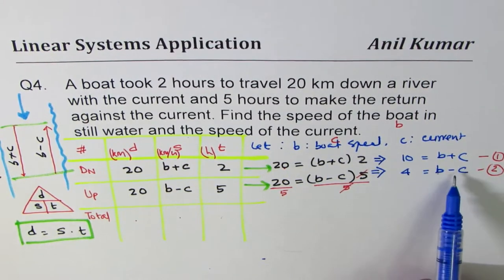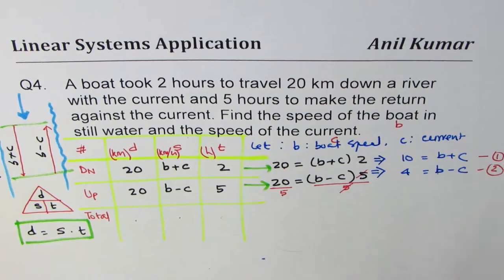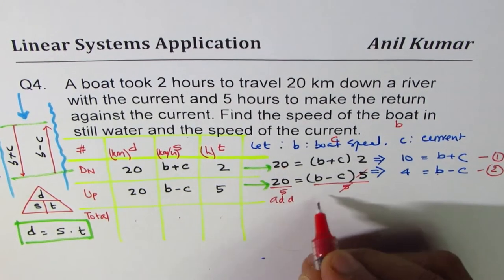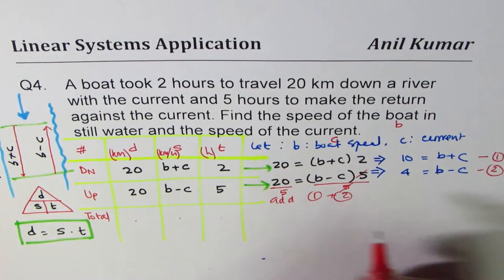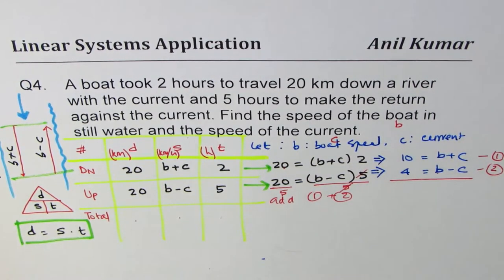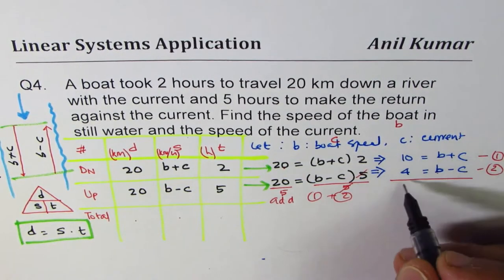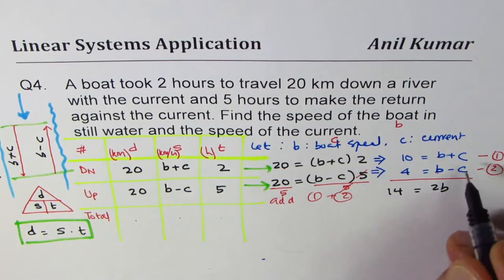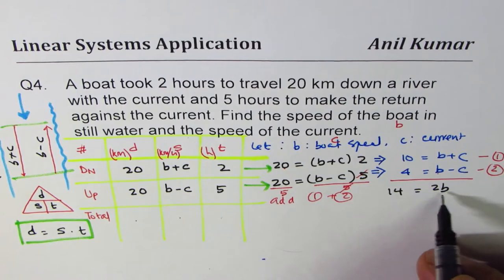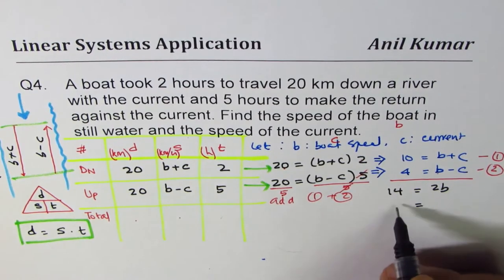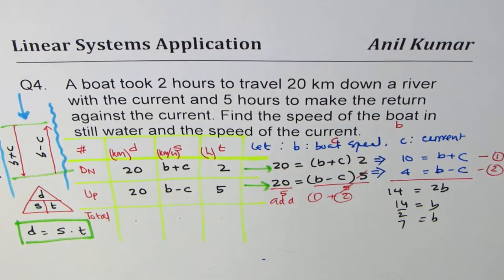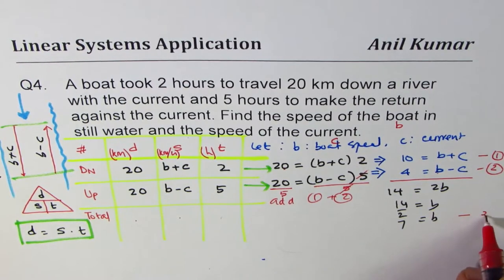Now you could use elimination by adding these two. That's simplest. So what we do here now is we'll add equation 1 and 2. So when you add them up, what do you get? 10 plus 4 is 14 equals to B plus B is 2B. C minus C is 0. So 2B is 14. Dividing by 2, we get B equals to 7. So we'll call this as our equation number 3.